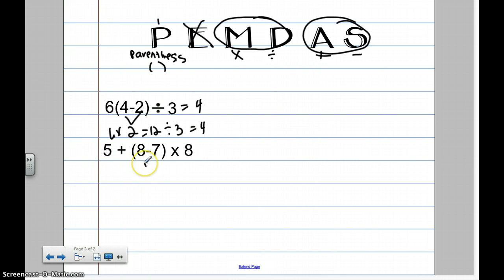Let's look at this one. 8 minus 7. So, I'm going to do 8 minus 7. That's going to be 2. Then, I did my parentheses. Next, I'm going to multiply. 2 times 8 is 16.